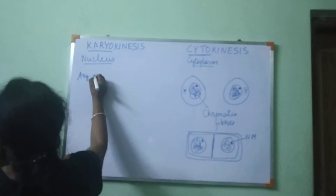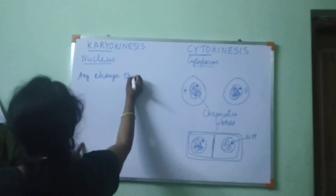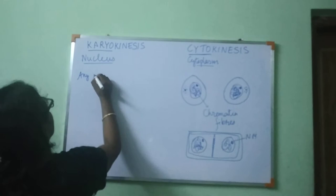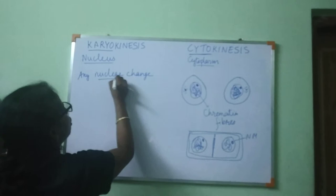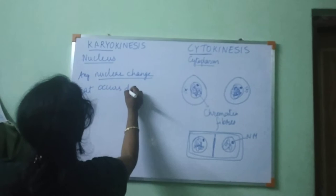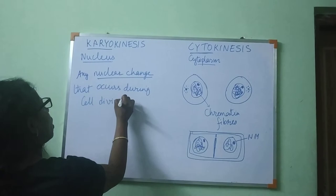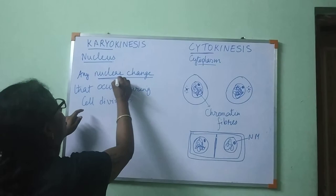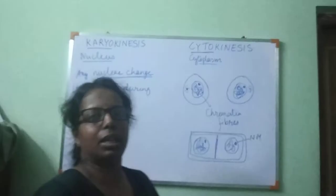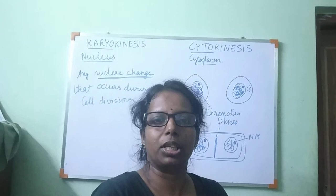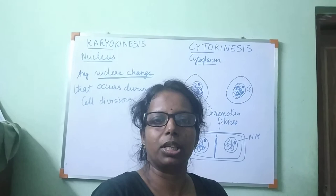In your book, the definition is mentioned as: any nuclear change that occurs during cell division is known as karyokinesis. The meaning of nuclear change basically means that the DNA or the chromosome is divided.